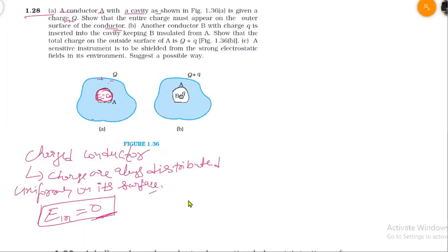For the Gaussian surface, the integral of E·ds equals Q by epsilon naught, where Q is the charge inside. Since the electric field is zero, the net flux is zero. If net flux is zero, then Q inside is zero as well. This completes the first part.